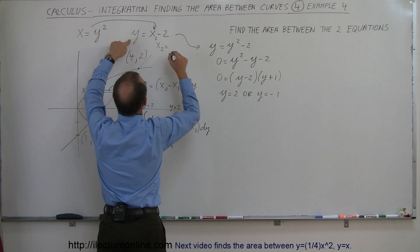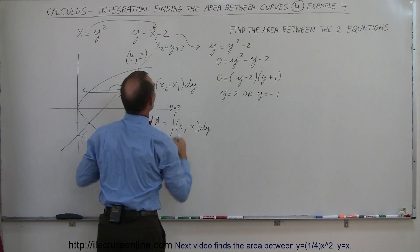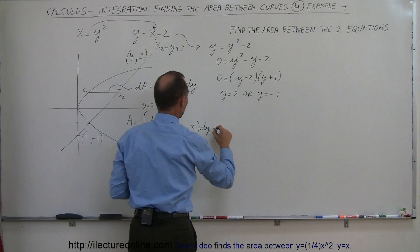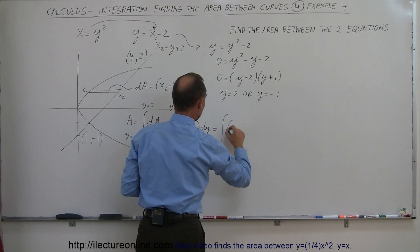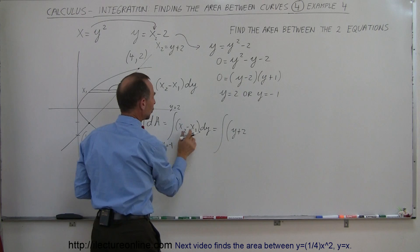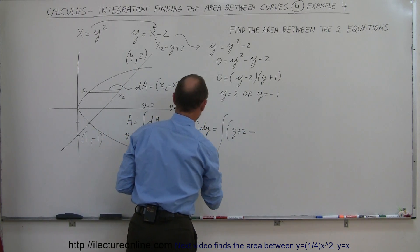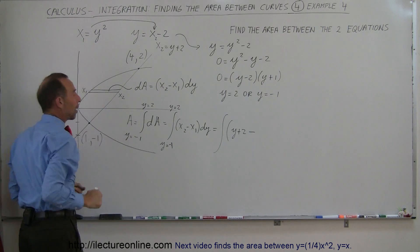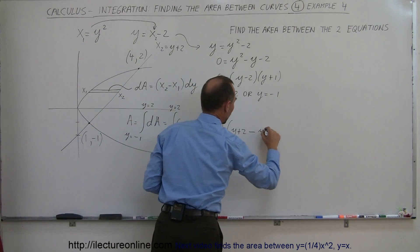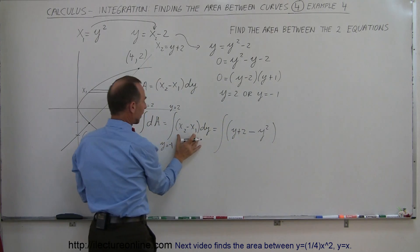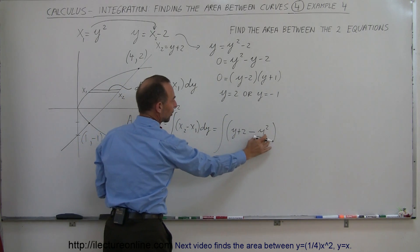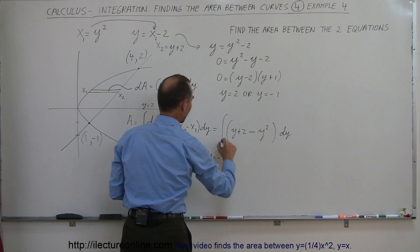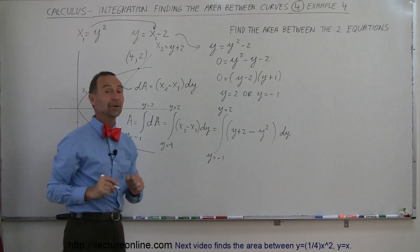So instead of x2, I can write y plus 2. So this is equal to the integral of the quantity y plus 2 instead of x2. And I'm going to subtract from that what my x1 is equal to. So this becomes my x1 and my x1 is equal to y squared. So it would be minus y squared. So that's my x2 minus x1, x2 minus x1 times dy. And my limits are from y equals negative 1 to y equals 2. And now I'm ready to integrate.